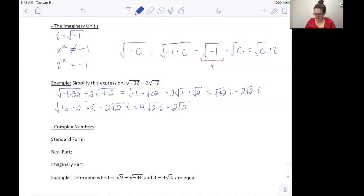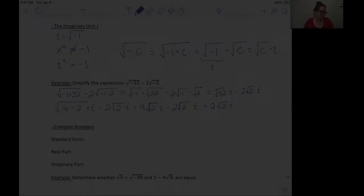Using what we know of subtracting radicals, we have 4 square root of 2 minus 2 square root of 2 and we have i's in both terms. They would be considered like terms we can combine them so 4 minus 2 is 2 so our solution for simplifying the expression is 2 square root of 2i.